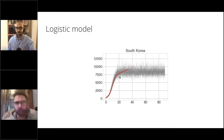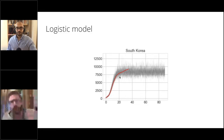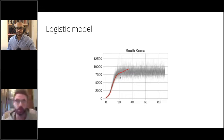Ideally, you do something called a prior predictive check, where without having fit the model to data, you just generate predictions from the model based on the priors. You can see what type of patterns the model is capable of producing. For example, you might see that under these priors, it goes from one to a million in a single day — that is completely unreasonable. You want to change your priors to get them in a range that roughly matches expected outcomes. That is one of the most principled ways to do this, but these are subjective choices that should be questioned and checked.